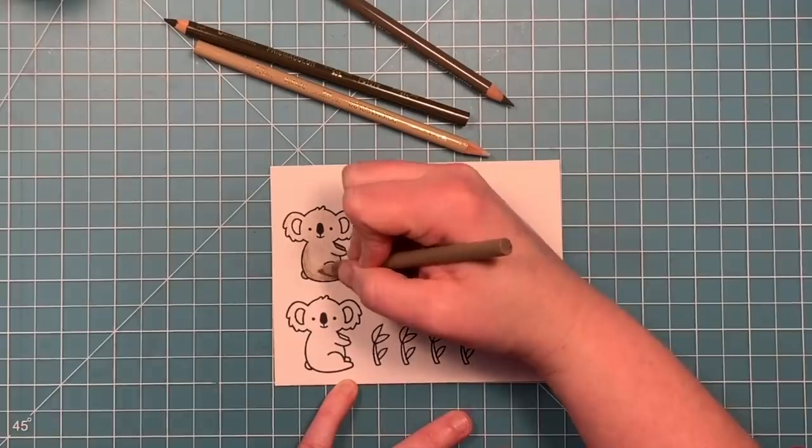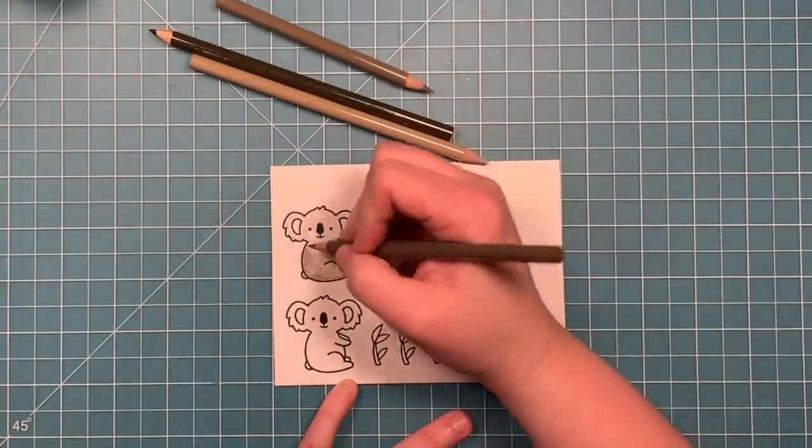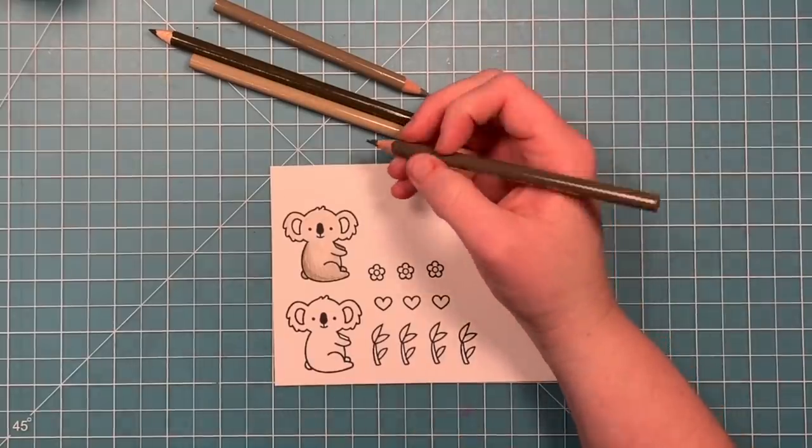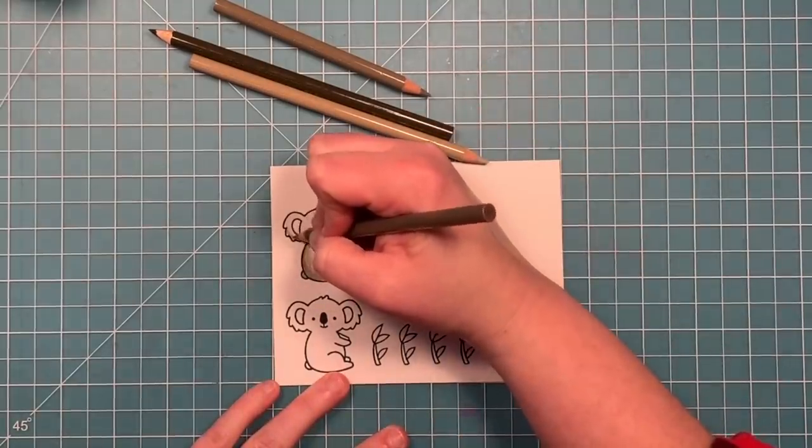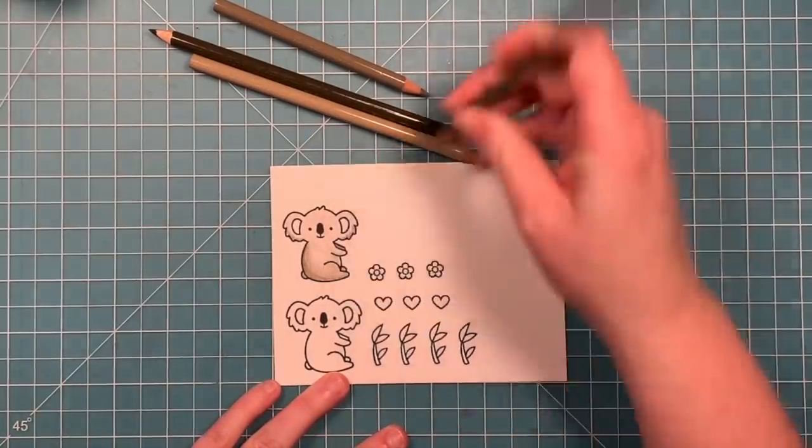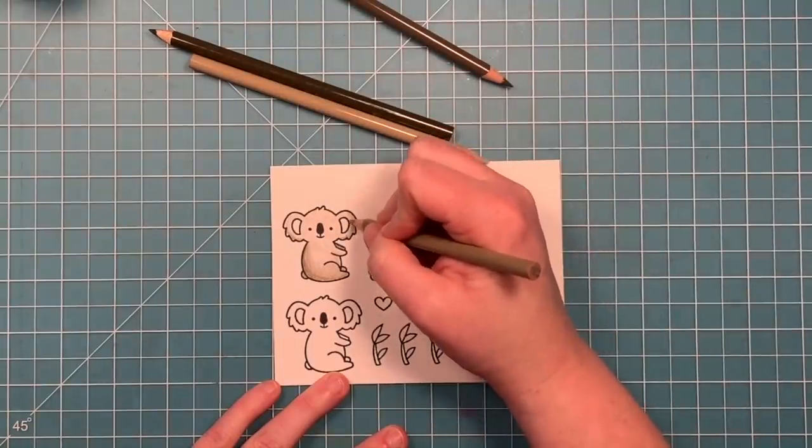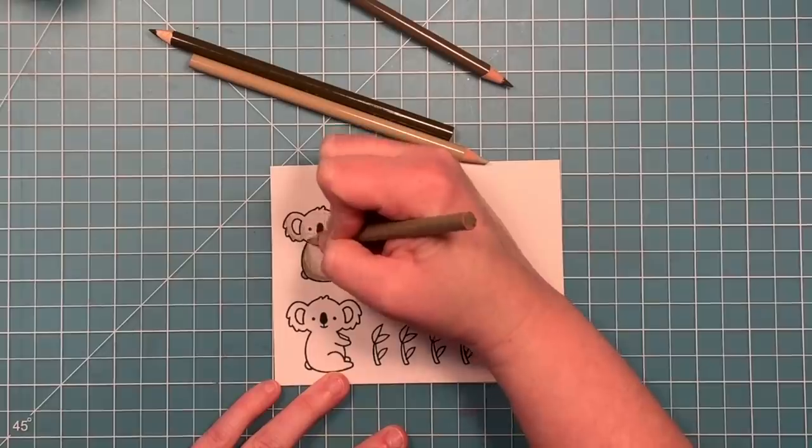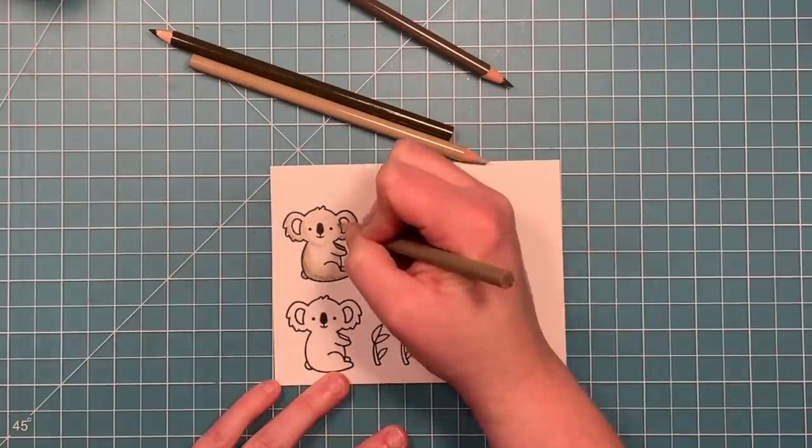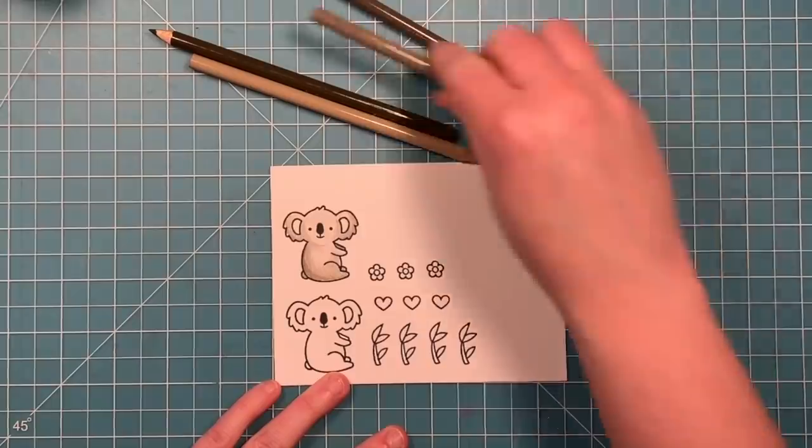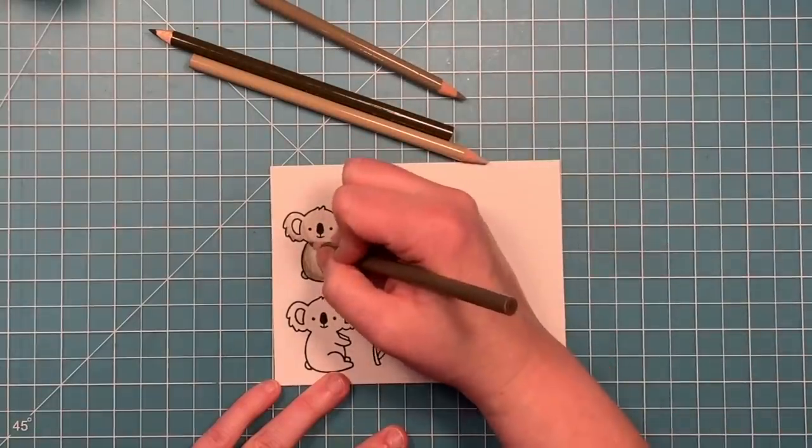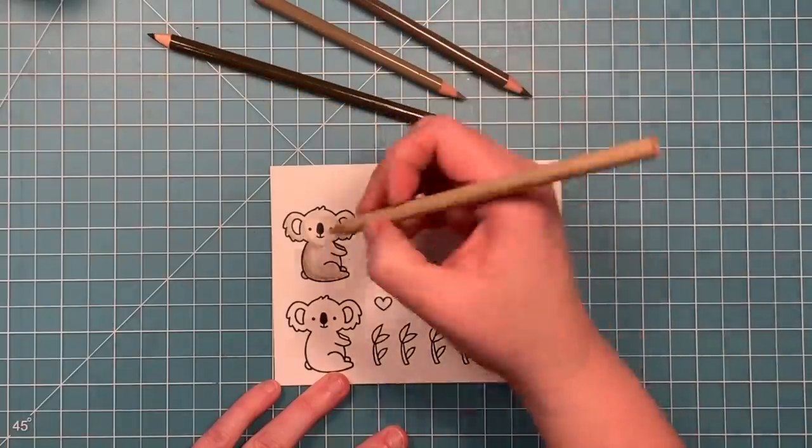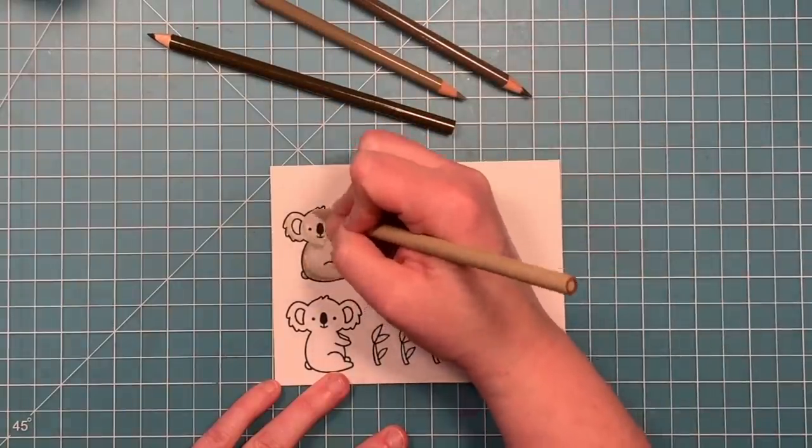You can just color with a pencil and not blend with the Gamsol, it just takes a little more effort. You can be messy when you're going to blend it out. You don't have to worry about your strokes as much because those are going to disappear when you start to blend it with the Gamsol and the paper stump. I understand that you can use baby oil too, but I've never tried that. That seems kind of messy and I'm prone to making messes.